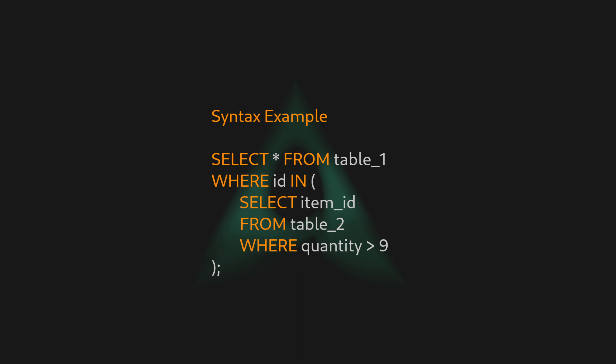Let's take a look at a simple example of the syntax. Here, we have selected from table 1 as the main query, and inside the parentheses, we have nested another select command that is selecting from table 2. The select command on table 2 is called a subquery or nested query. It calculates some data and gives it to the main query that is selecting from table 1, so the main query has some data to calculate based on it.